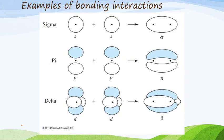The types of bonding interactions we're going to look at include sigma bonds, where two s orbitals overlap; pi bonds, where two p orbitals overlap; and delta bonds — which is something new — where the d orbitals overlap with one another.